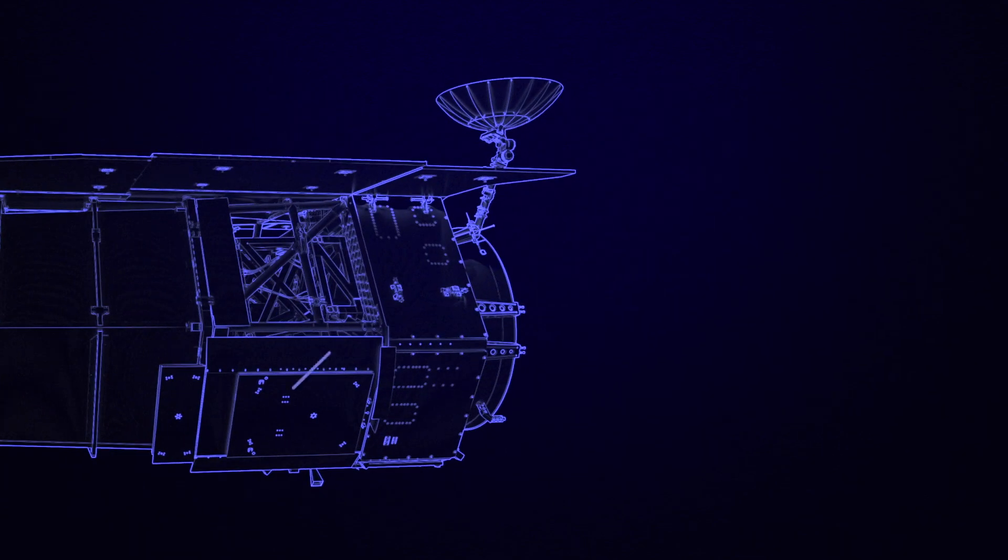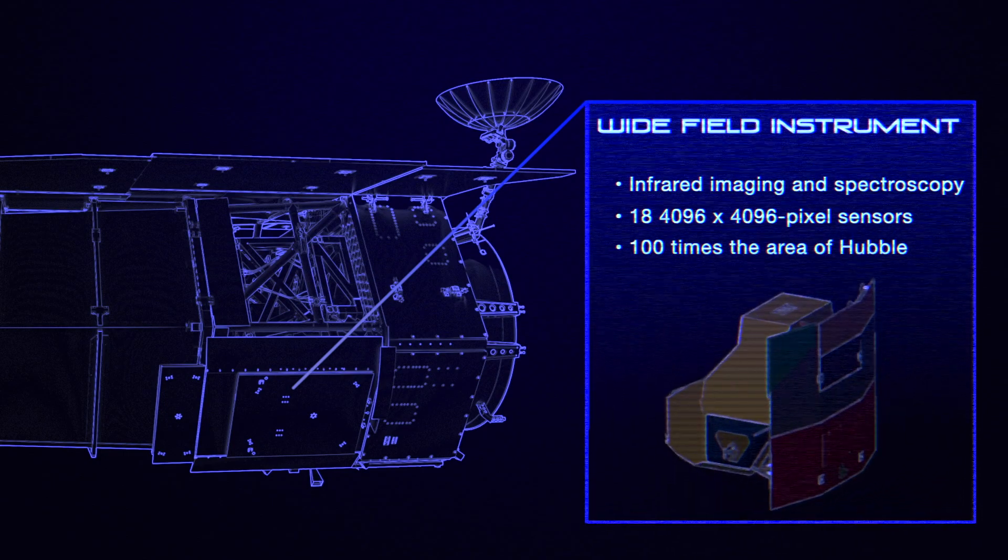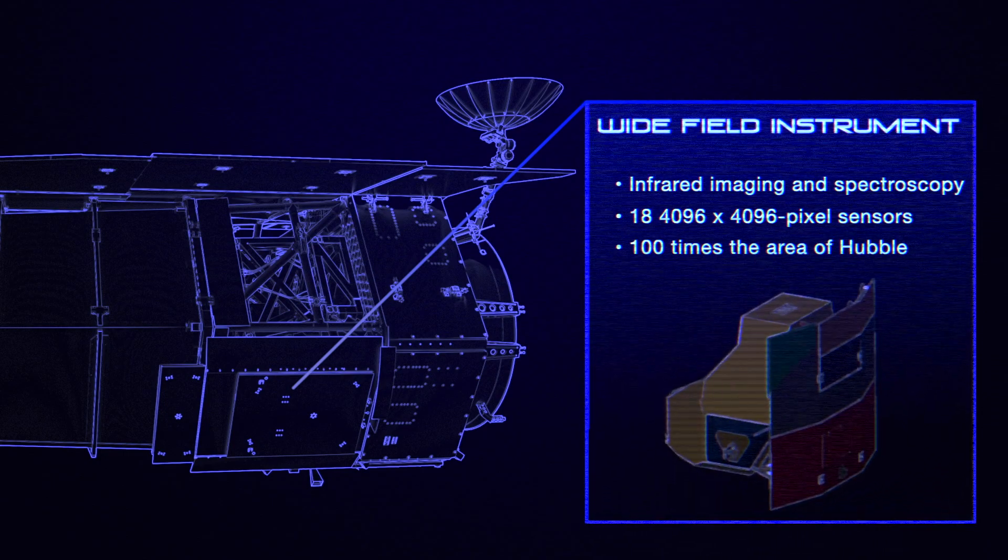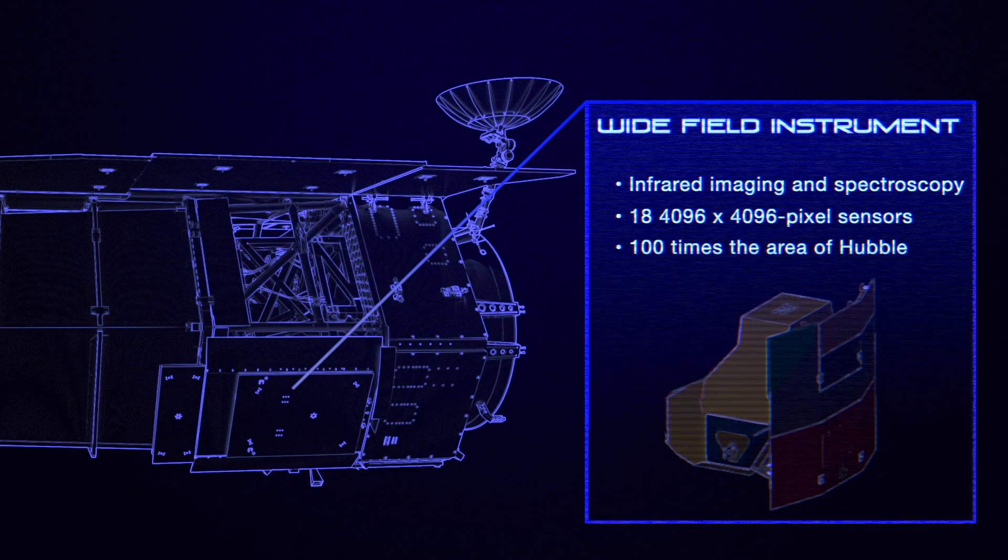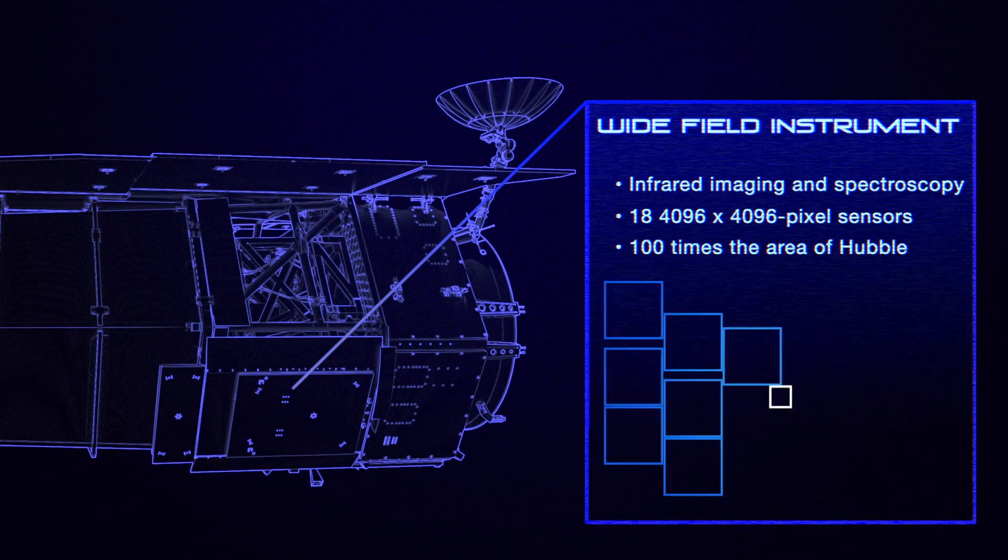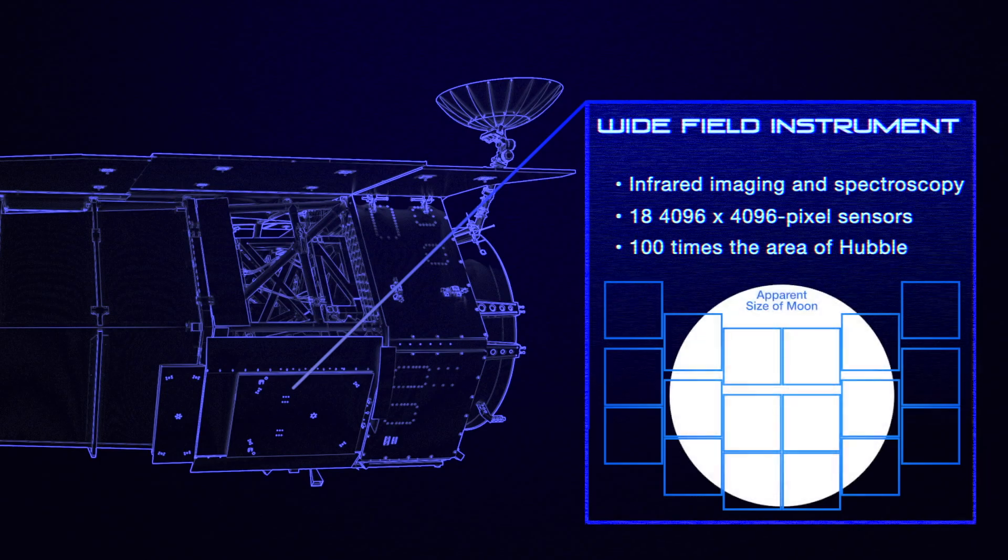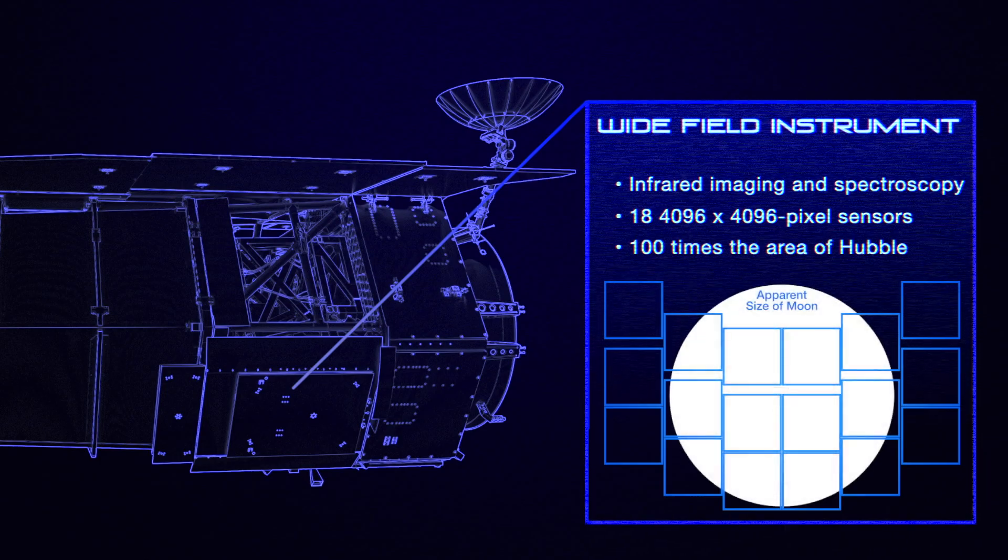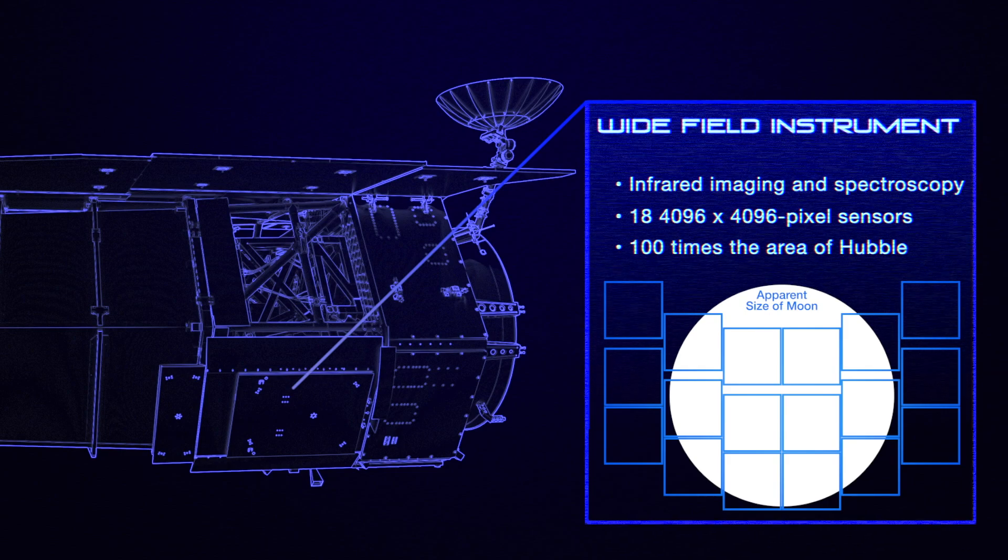Roman's main camera is the wide-field instrument, which will take infrared pictures of the sky to study dark energy, observe galaxies and stars, and find exoplanets. Instead of Hubble's single first-generation image sensor, the WFI incorporates 18 third-generation chips that allow it to take pictures capturing 100 times greater sky area than Hubble's. Each 300-megapixel image will enable scientists to study a large portion of the sky.